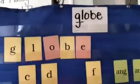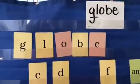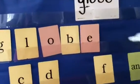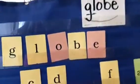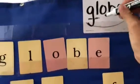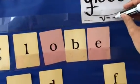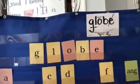Another thing that I need to mark up in the word globe is that vowel consonant E. So I'm going to scoop the syllable. I'm going to say this is a vowel consonant E word. I'm going to put that macron, or the little hat, over the O. And I'm going to cross out the E because he doesn't make a sound.